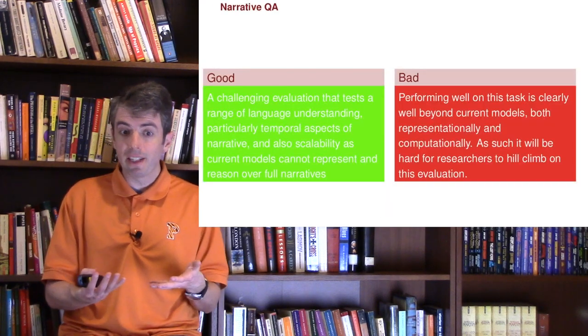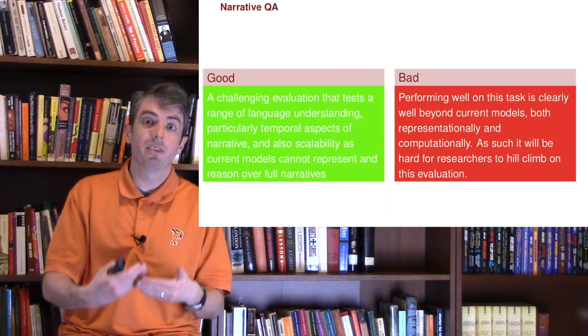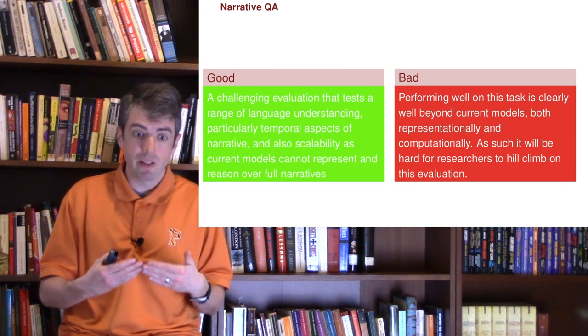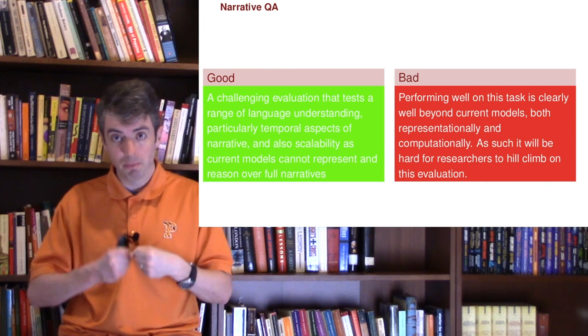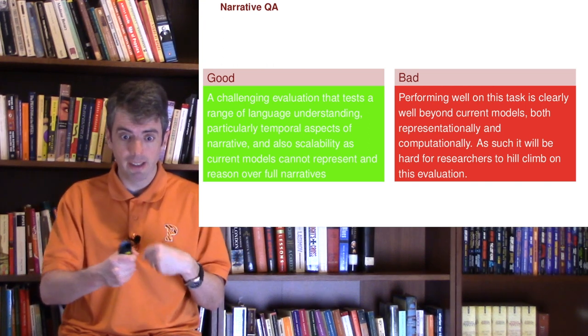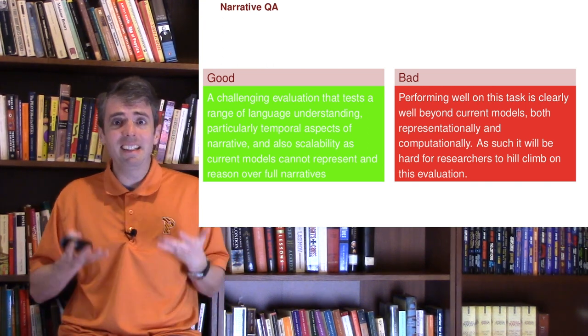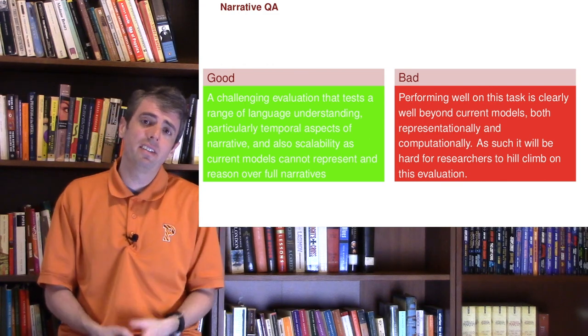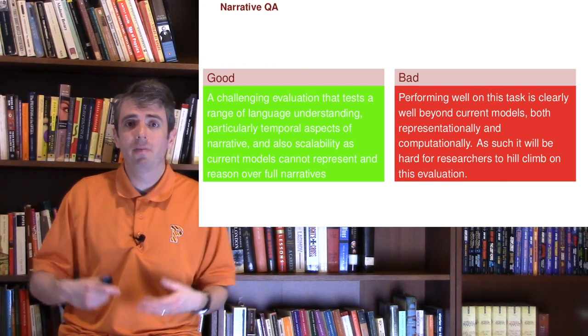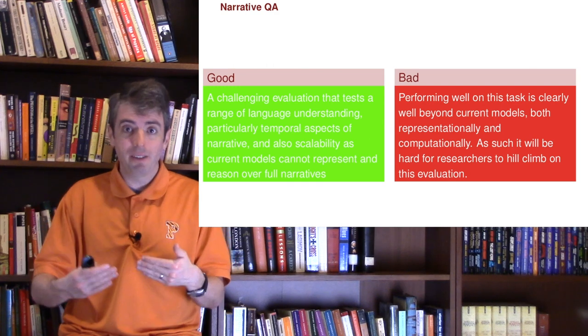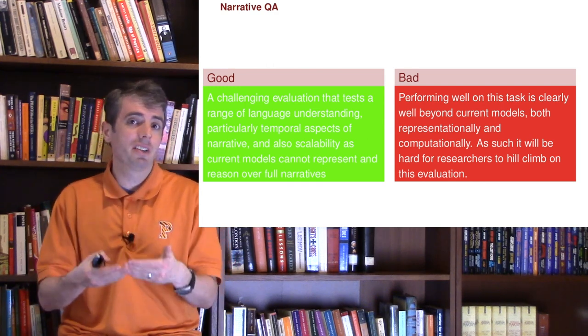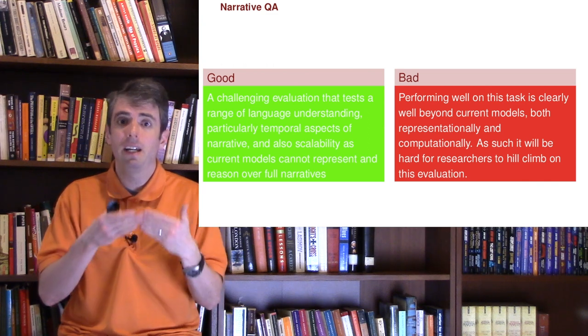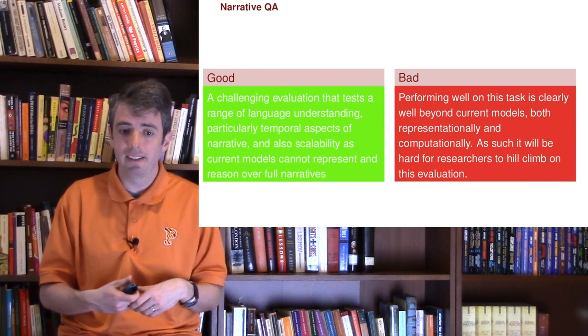So the great thing about this dataset is that it requires a large amount of reasoning, and you also need to understand temporal evolution in the course of a story. The downside is that this is way too hard and the dataset is too small. So the models that we have can't answer this task, and models that maybe could answer this task given sufficient data don't have enough examples to do well on this task.